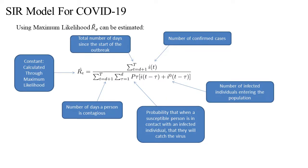Using maximum likelihood, the constant RE can be estimated. RE depends on the number of days since the start of the outbreak — that is the whole number of days that data is available for — the number of confirmed cases, the number of infected individuals entering the population, the probability that when a susceptible person is in contact with an infected individual they will actually catch the virus, and the number of days a person is contagious.